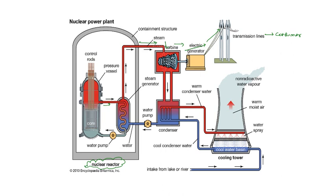This working principle is the same as that of the steam power plant, except that in a steam power plant coal is the main fuel, whereas in a nuclear power plant uranium-235 is the fuel. The main working depends on the reactor, where the nuclear fission takes place. The reactor is the main part of the nuclear power plant, where energy released as a result of nuclear fission is utilized to heat the coolant, which in turn generates steam to be used in the steam turbine.